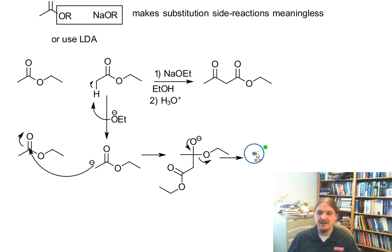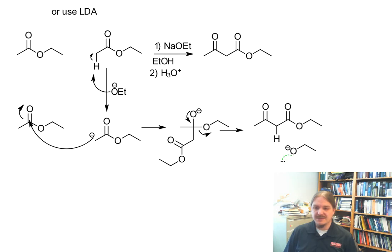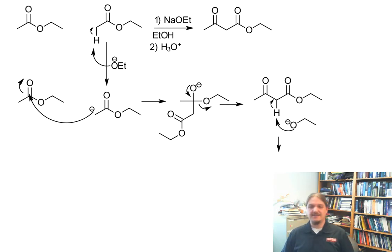And then followed by loss of leaving group to get the substitution product. And it would be tempting to stop here because after this substitution step, we have the product that we know is the product of this reaction. However, this product is acidic relative to the reaction medium and gets deprotonated. And in fact, it's this proton transfer step that prevents further nucleophilic substitutions from occurring on the Claisen product, because now it's deprotonated and it's resistant to further nucleophilic attack.